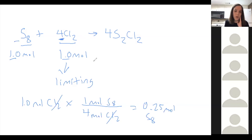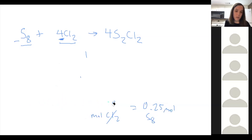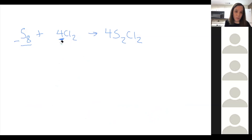In this example, we would only need 0.25 moles of S8 to react completely with one mole of Cl2. So you'd have 0.75 moles of S8 in excess in this situation.